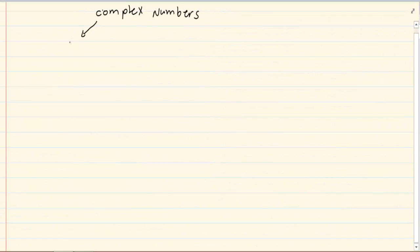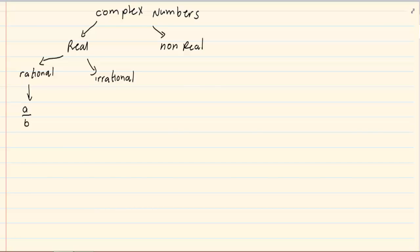In the complex number system we had discussed real and non-real. We had further divided real into rational and irrational. Rational is clarified as anything that can be written as a over b. Under that we can get fractions, integers, whole numbers and natural numbers.